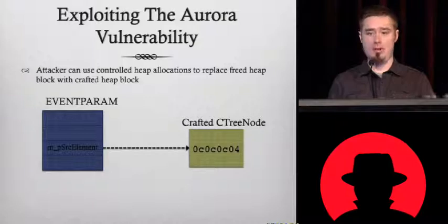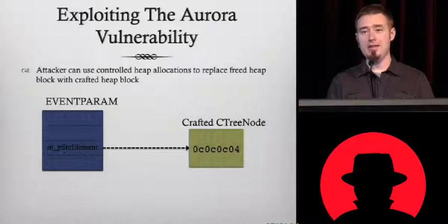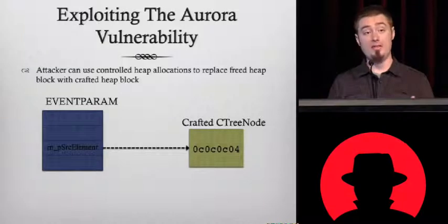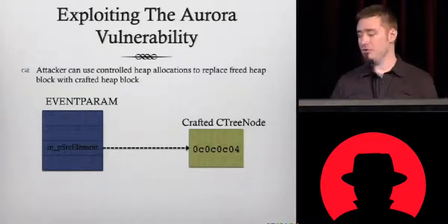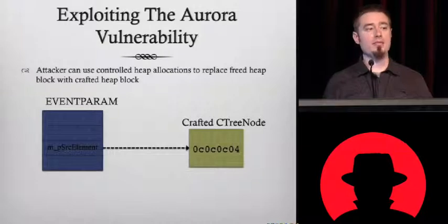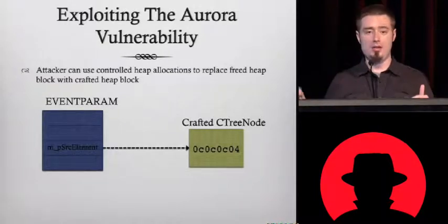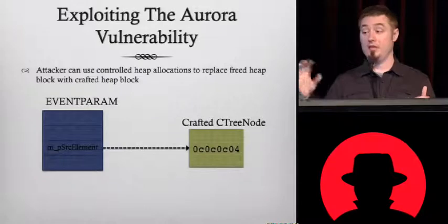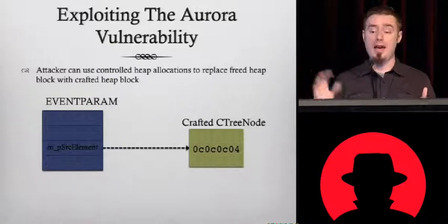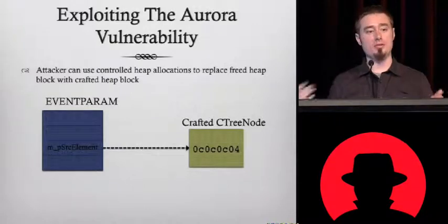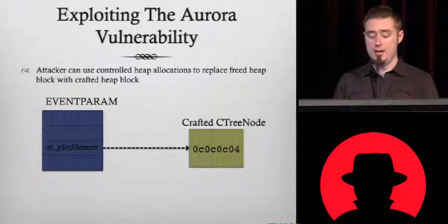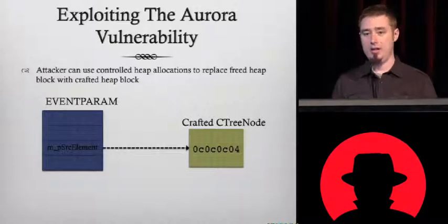That's obviously not going to help, because getting the length to be equal to the address of our fake VTable on the heap means we're going to have a huge string. So we need to find something else. If you go through IE, you can find a number of places where they do memory allocations that let you control both the size and the full contents — the first four bytes and the rest — and so you can have a fully crafted cTreeNode object.